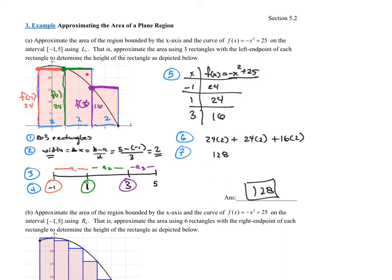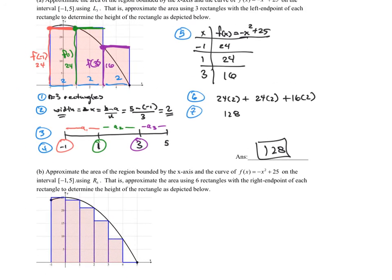Just by looking at the picture, it seems like we've greatly overestimated this area. So how can we make it more accurate? Maybe not use the left endpoint — maybe use the right endpoint. And maybe use more rectangles. The answer is it totally depends on the function as to what the best strategy is. You can't say one way is always better — that's not true. But let's do the exact same problem using a different approach.